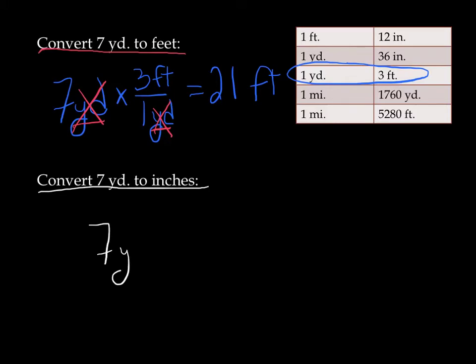Here we go. We're going to do 7 yards times 36 inches for every 1 yard. Our yards cancel out. The only unit I have left is inches. And I take 7 times 36, which is, if I type that in right, I believe that's 252.